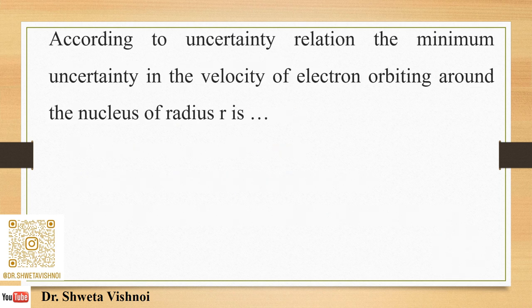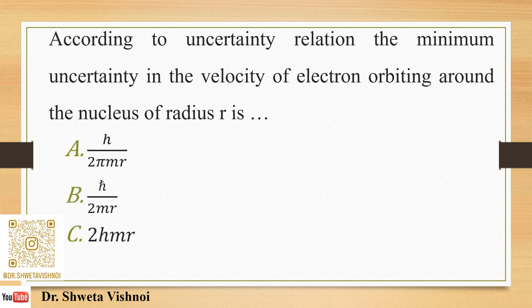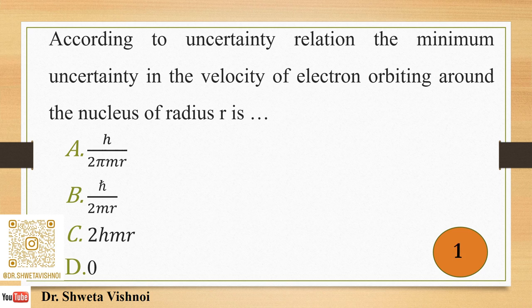According to the Heisenberg uncertainty relation, the minimum uncertainty in the velocity of an electron orbiting a nucleus of radius R is: (A) h/(2πmr), (B) h_cross/(2mr), (C) 2hmr, (D) 0. There may be doubt between options A and B, but note the question asks for minimum uncertainty. We use Δx·Δp ≥ h/(4π), giving h_cross/(2mr). Correct answer: B.